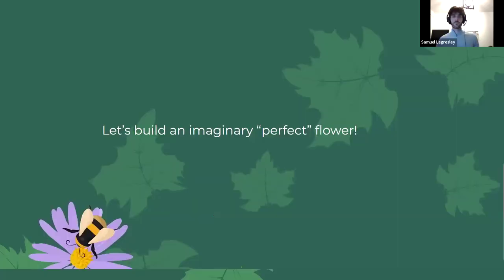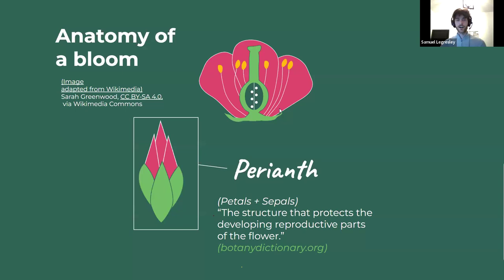Let's build an imaginary perfect flower. 'Perfect' just means that it has the male and female parts on it — not all flowers are perfect. This perfect flower has the developed version with all the stamens and the pistil — those are the male and female parts. The perianth is the first part we're looking at: it's the combination of all the petals and the sepals, a structure that protects the developing reproductive parts of the flower.